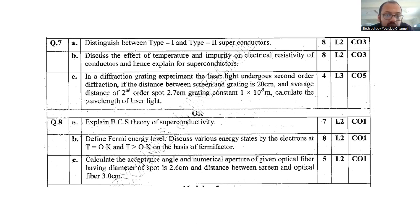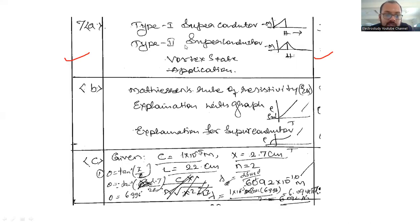Question 7b: discuss the effect of temperature and impurity on electrical resistivity of conductors and hence explain superconductors. This carries 8 marks. Write the mathematical rule for the resistivity equation. Explain the graph - this graph is essential.